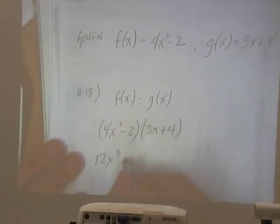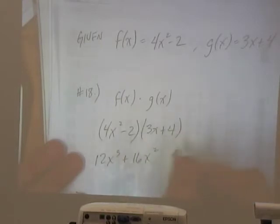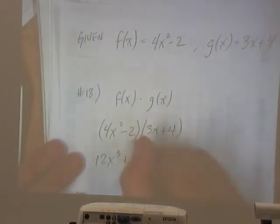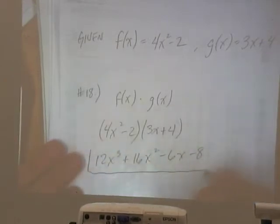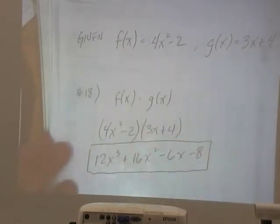4x squared times 3x gives us 12x cubed. 4x squared times 4 gives us plus 16x squared. Negative 2 times 3x gives us negative 6x. And negative 2 times 4 gives us minus 8. That's it. Any questions on 18?